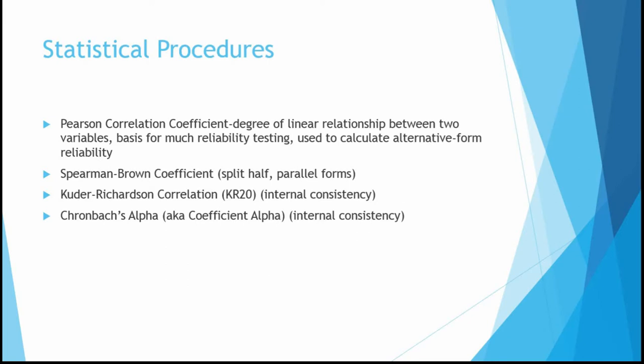We don't use the Pearson correlation a lot for reliability testing, though we do use it for alternative form reliability. Three other tests are used more often: the Spearman-Brown coefficient is used for split-half and parallel form reliability; the Kuder-Richardson correlation (KR20) is used for internal consistency, especially for tests with items that only have two possible answers; and Cronbach's alpha (also known as coefficient alpha) is probably the most common measure of reliability, also measuring internal consistency but used with tests that have items with more than two response options.